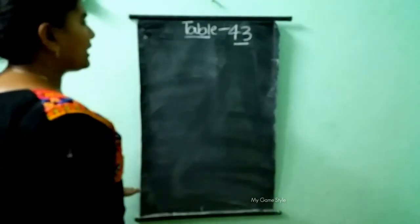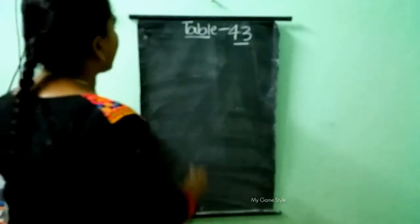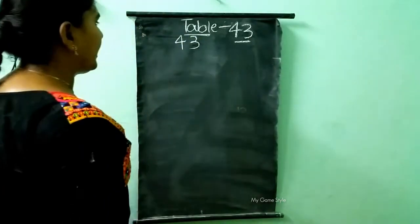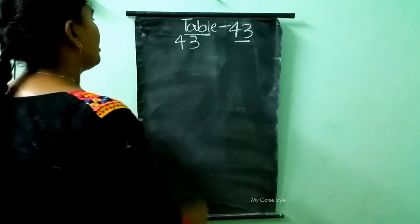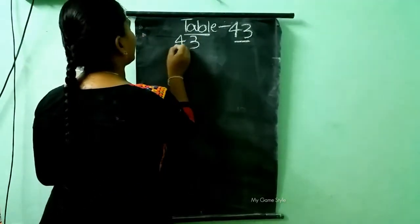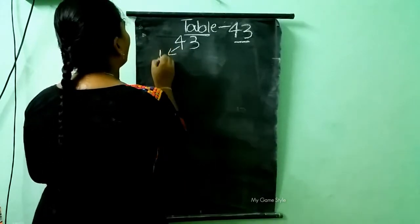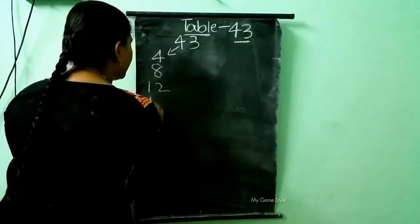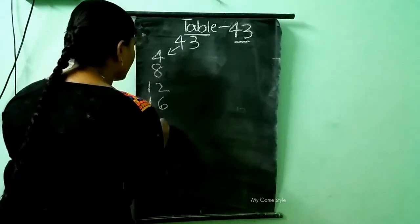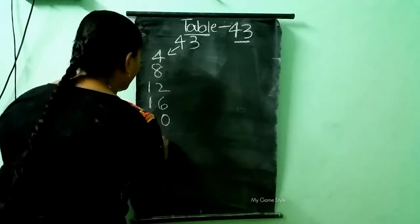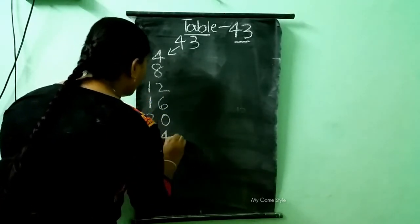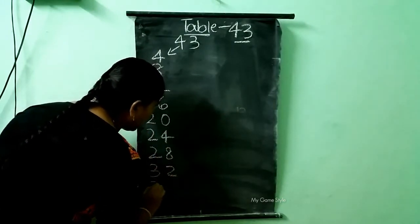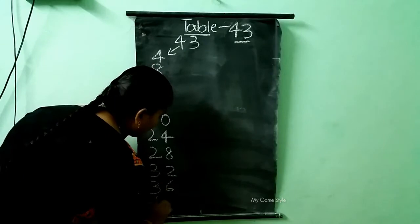Now I am writing the 43 table. Here we have the digits 4 and 3, making 43. Here 4 is there, so I am writing the 4 table here: 4, 8, 12, 16, 20, 24, 28, 32, 36 and 40.